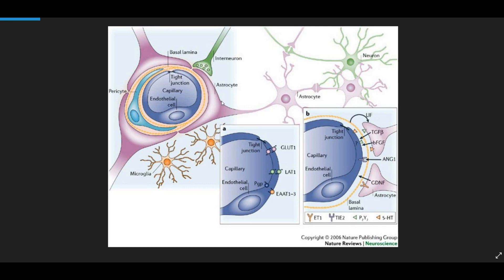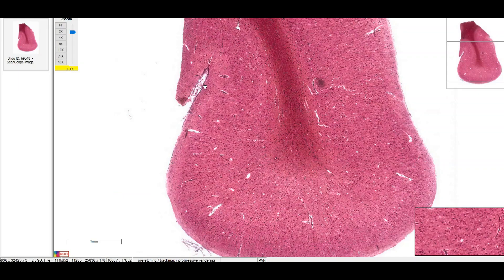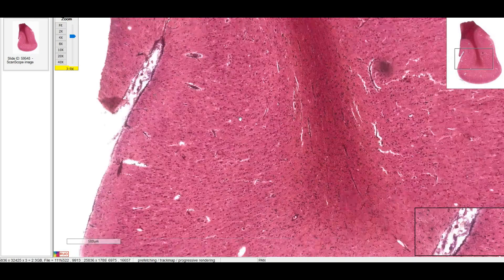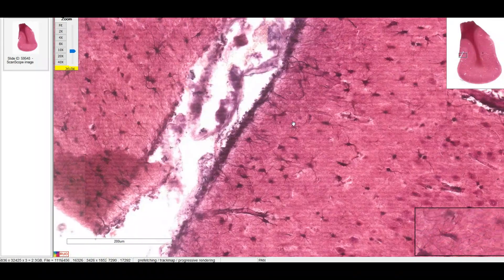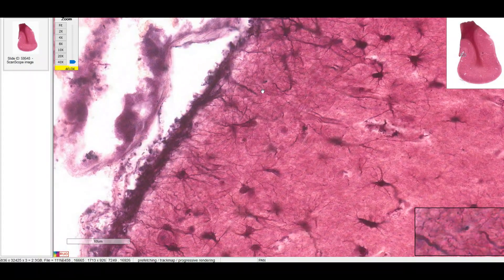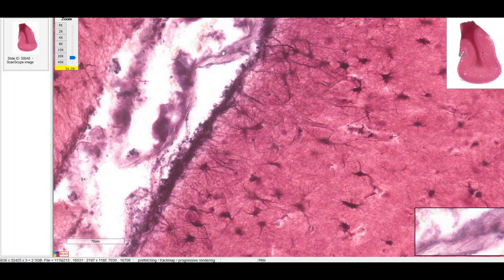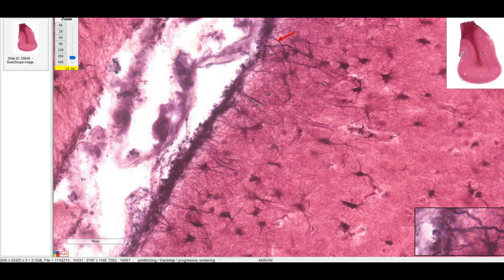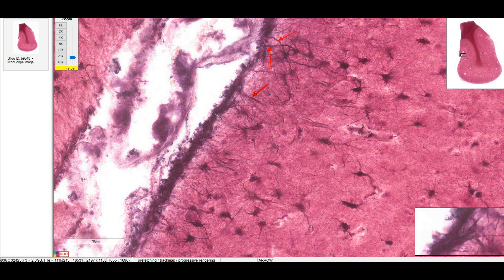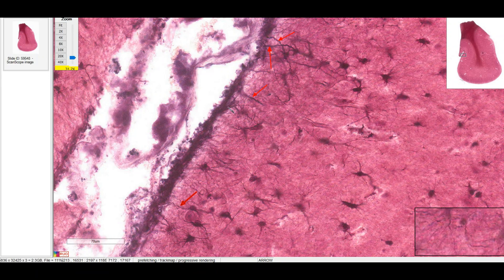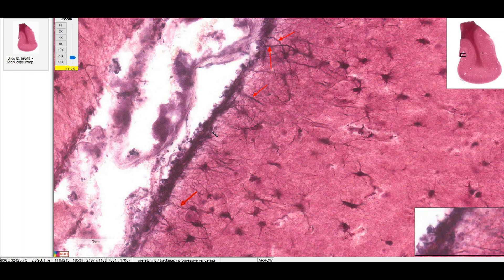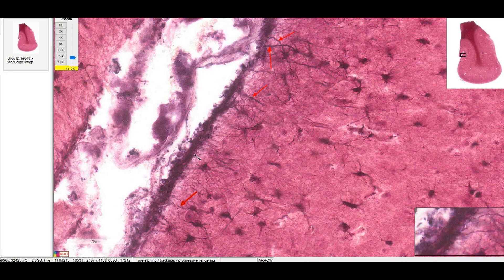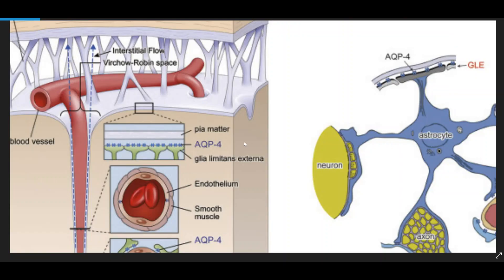But there's also an external glialimitans. So let's take a look at that now. Let's zoom in to where we can find some pia mater. You can see here how there are astrocyte processes that are extending towards the pia mater over here. It's going to form this layer called the external glialimitans just deep to the pia mater. And here's a schematic from a Nature article on what that relationship between the external glialimitans and the pia mater looks like.